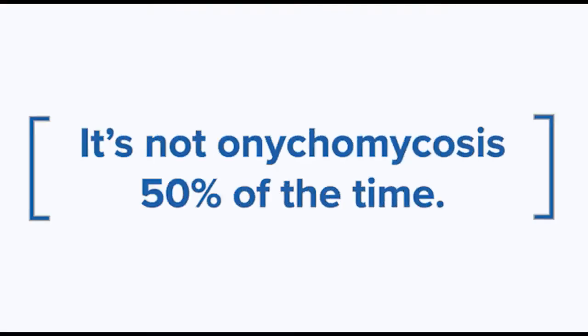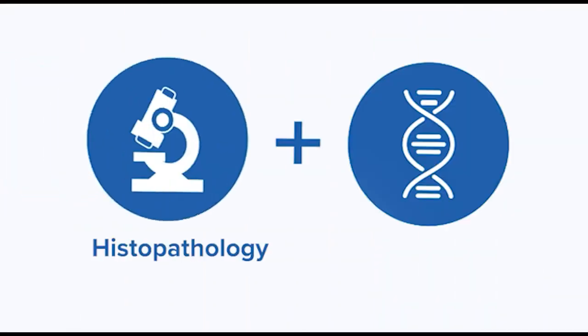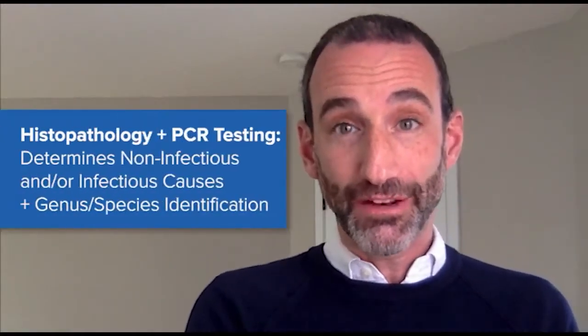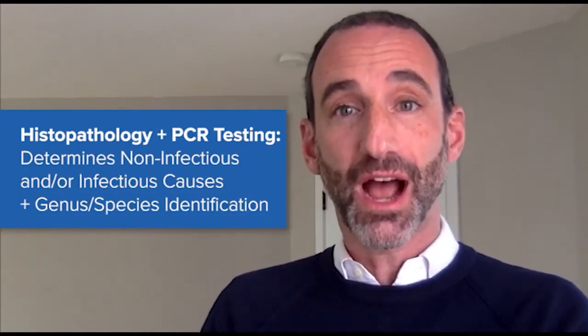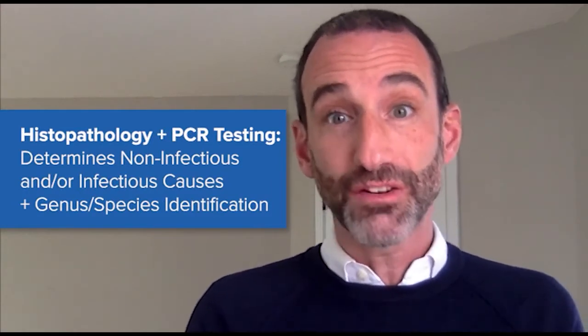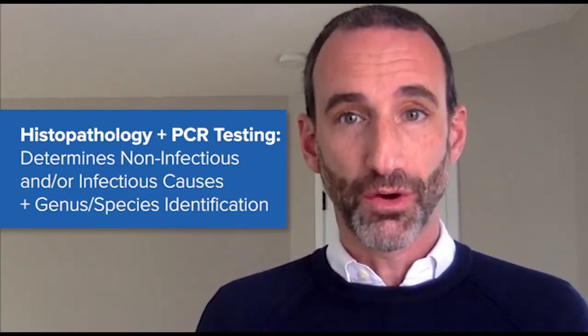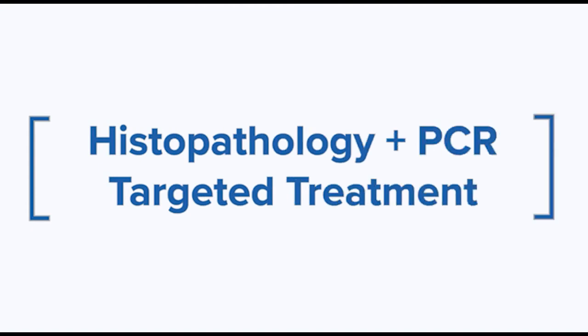If we were to treat every single dystrophic toenail as onychomycosis, we are going to be wrong 50% of the time, which is bad for lots of reasons. That is why I combine BACO's histology and PCR nail testing to determine infectious versus non-infectious cause — and when it is infectious, identify the organism so that we could target treatment and treat appropriately.